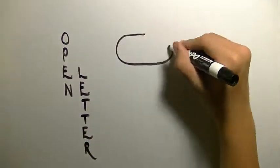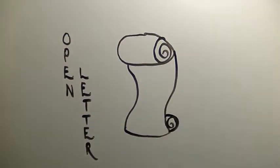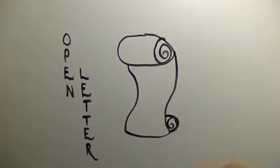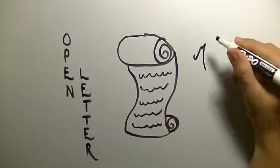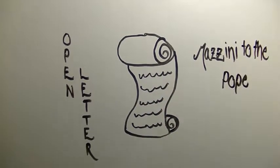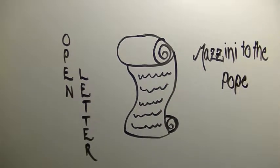Giuseppe Mazzini, an Italian politician and journalist, wrote a letter to Pope Pius IX calling for the unification of Italy. He said: "Unification would come anyway because it was part of God's providence, but better if under the papal patronage with you at its head. Our struggle will take on a religious aspect and liberate us from the risks of reaction and civil war."